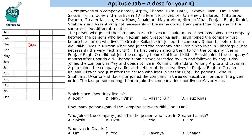Tarun joined the company just before GK. Om joined the company three months before Tarun did. So Om is linked to Tarun, and Tarun is just before GK. If this position is Tarun, then the next is GK, and three months before Tarun is Om. The first person among them to join lives in Punjabi Bagh, so we put Punjabi Bagh there.